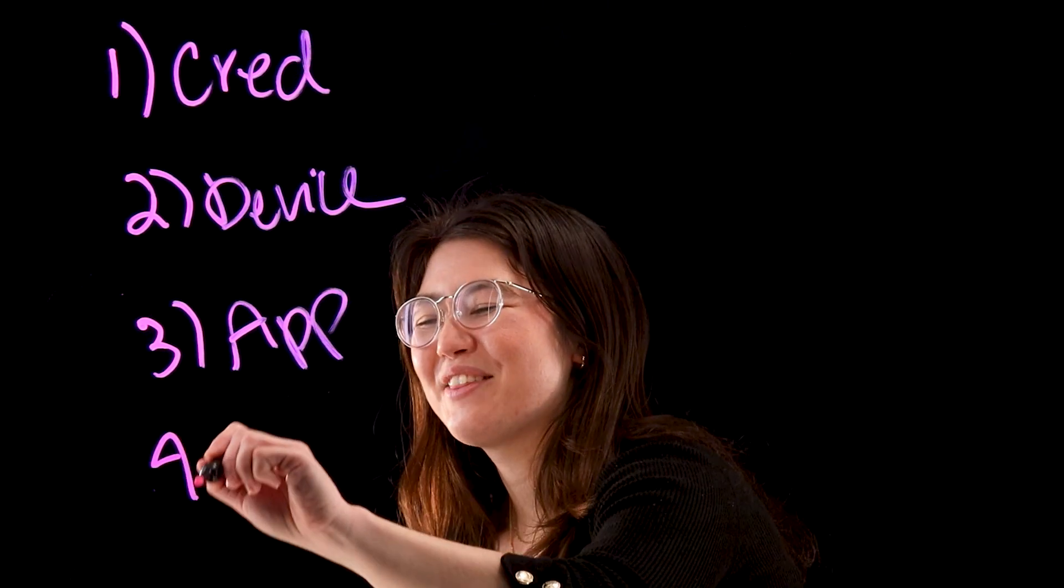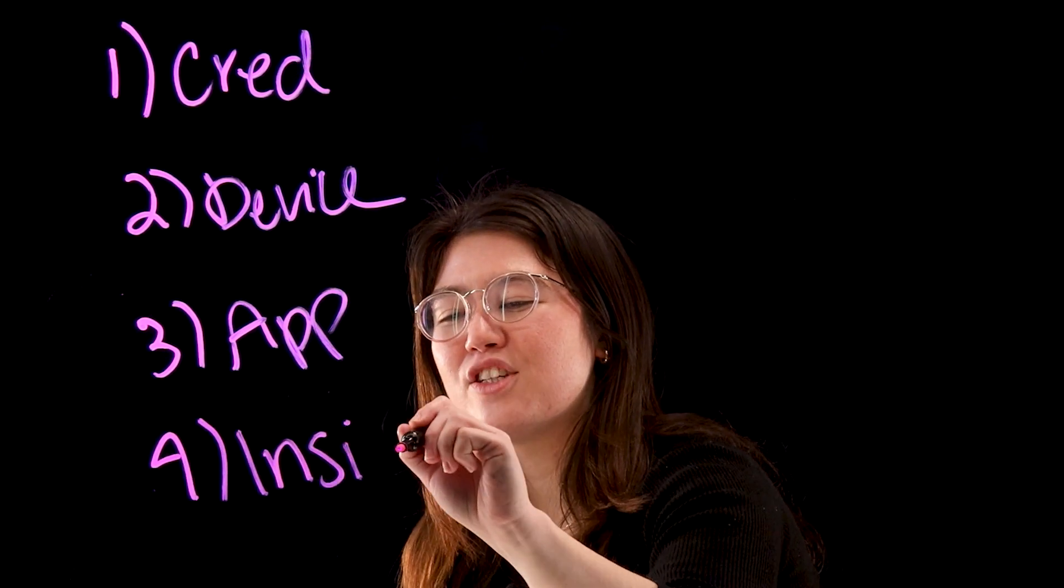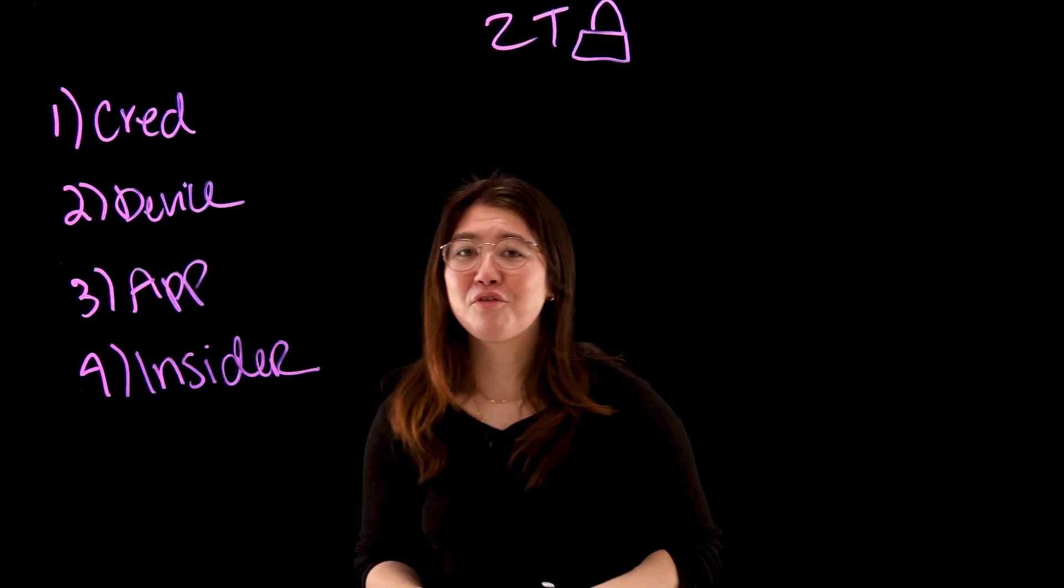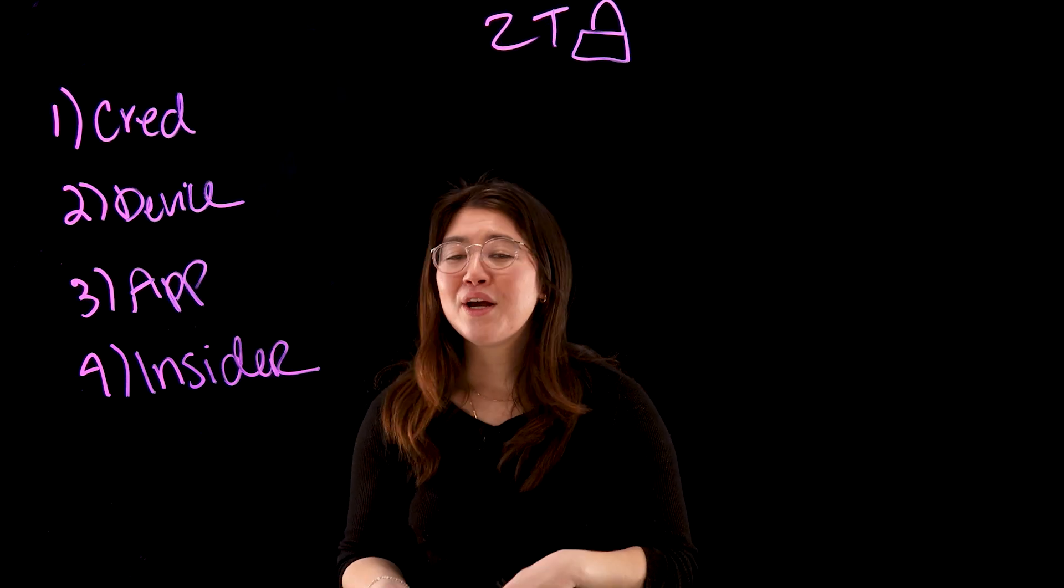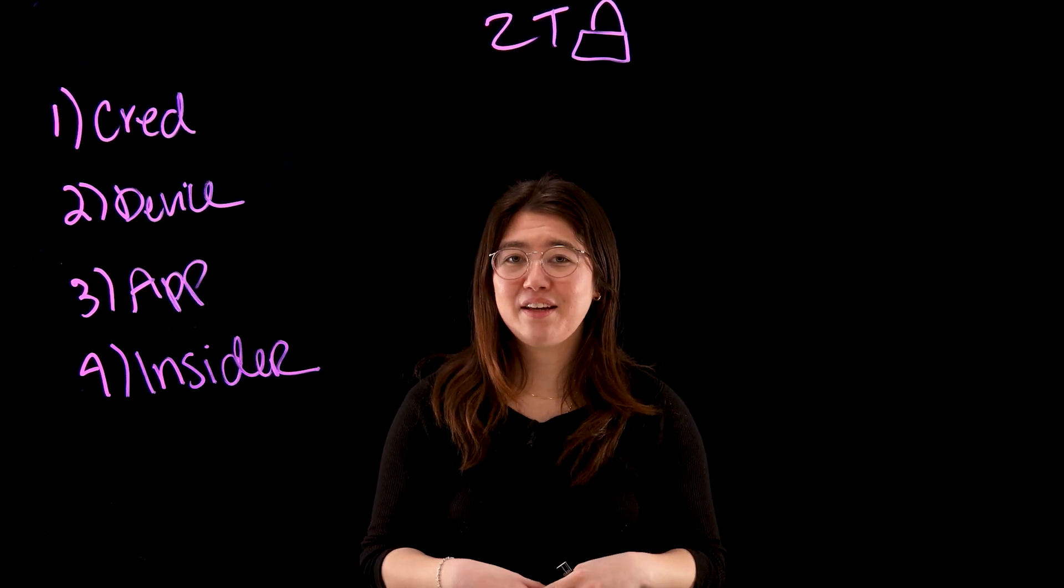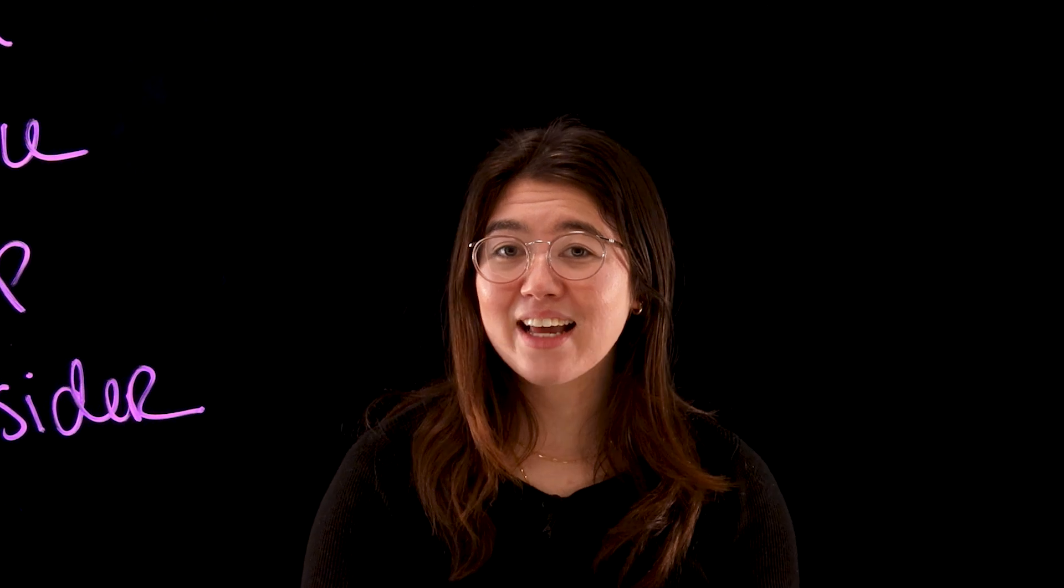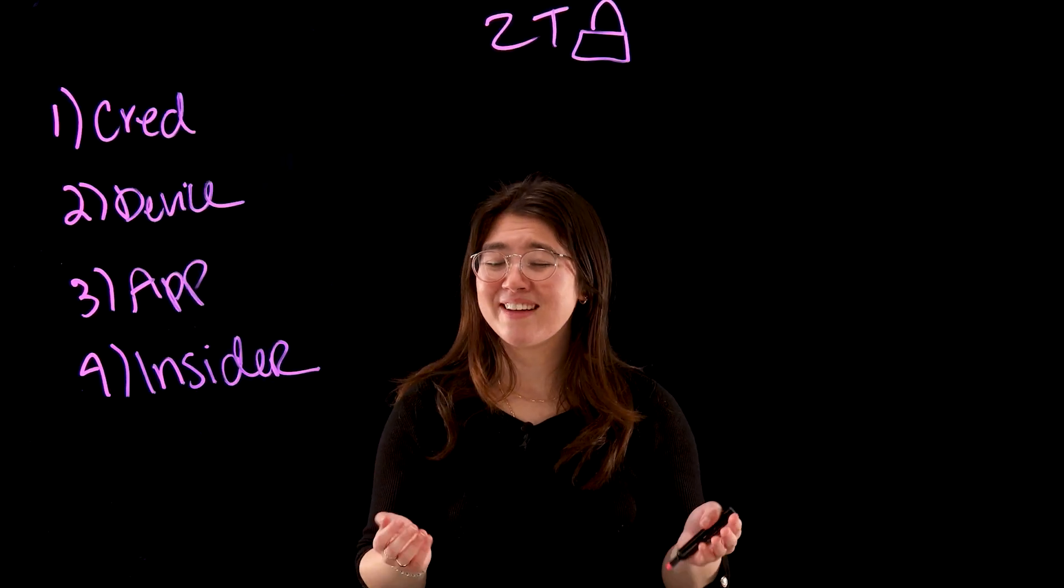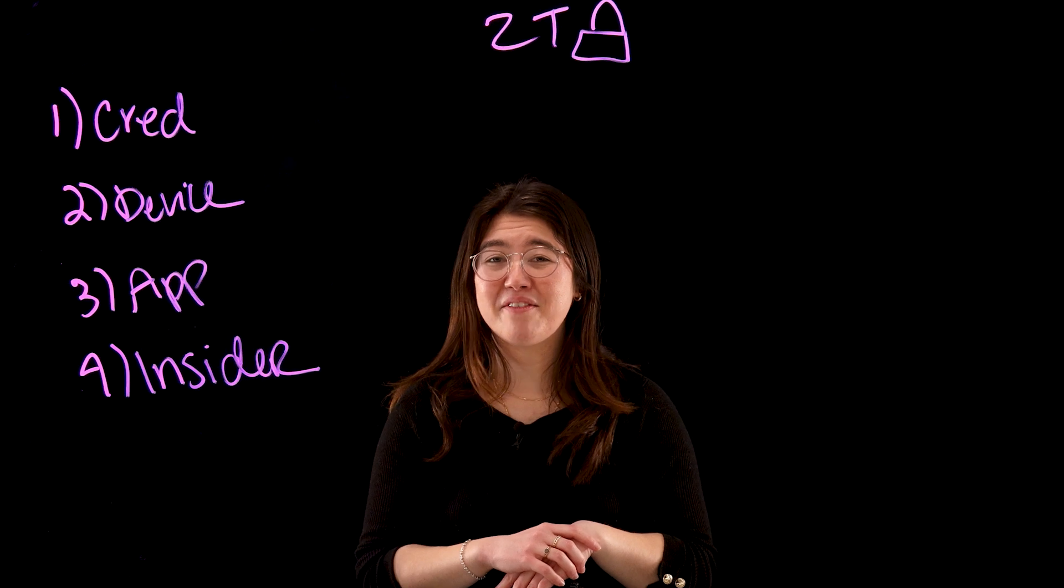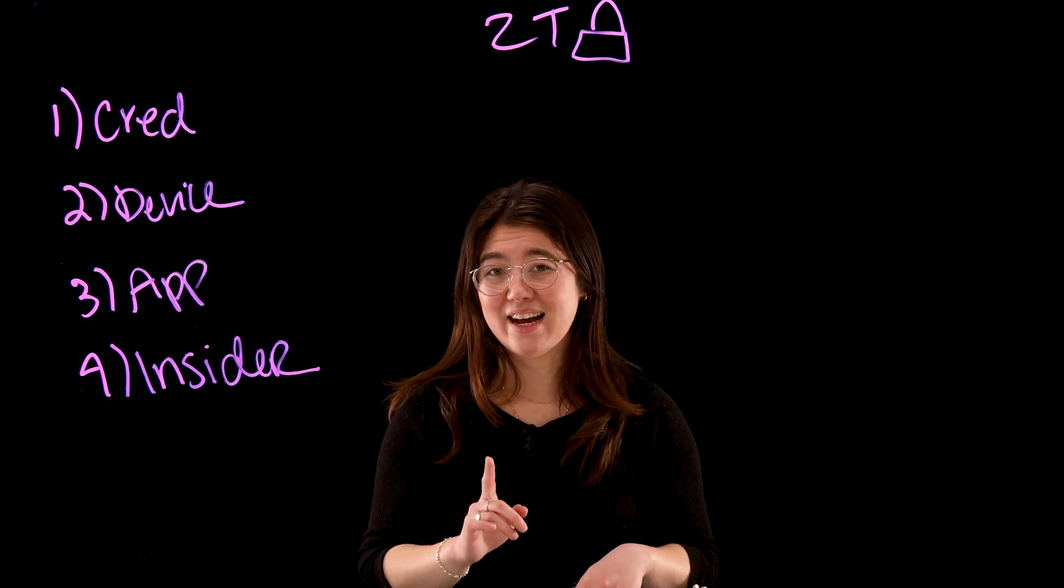Fourth and final, insider threat. Insider threat can show up in a variety of different ways, from a disgruntled employee turning rogue to a perfectly happy employee accidentally falling for a vishing scheme, a social engineering attack that targets users through call and text. Unfortunately, this is super common, as a study found that 50% of companies had at least one insider attack in 2022.